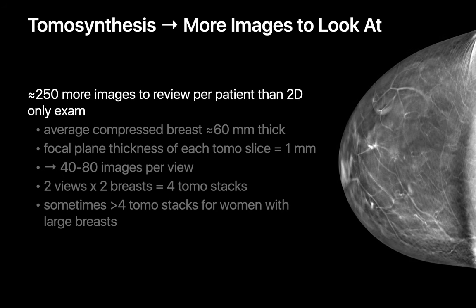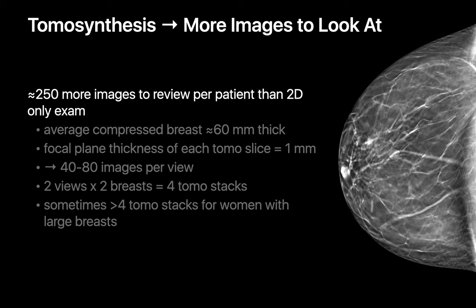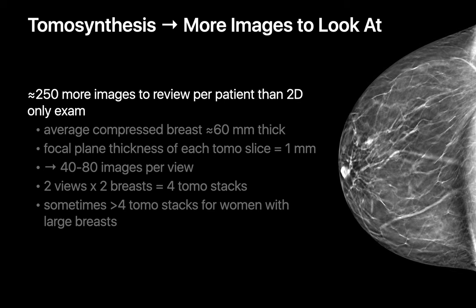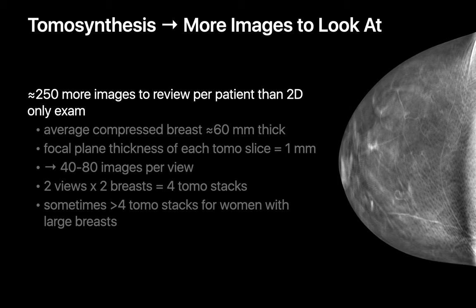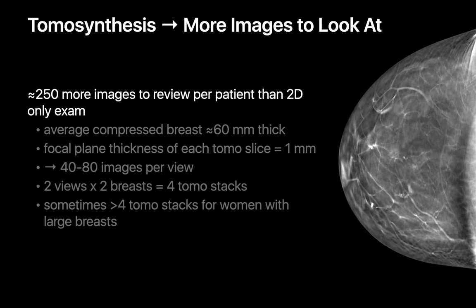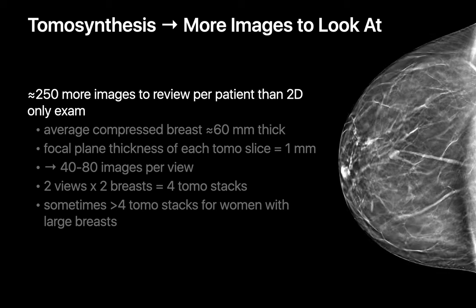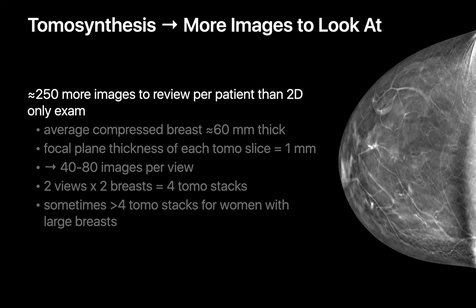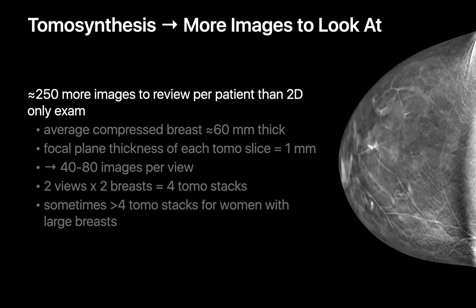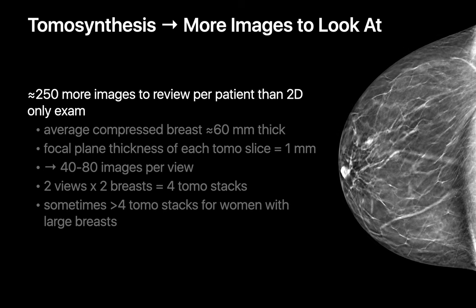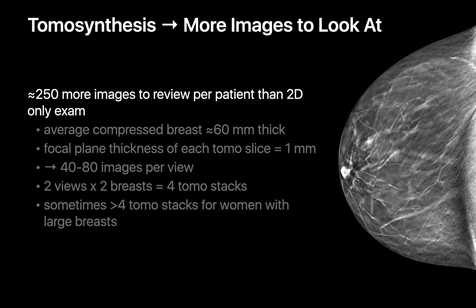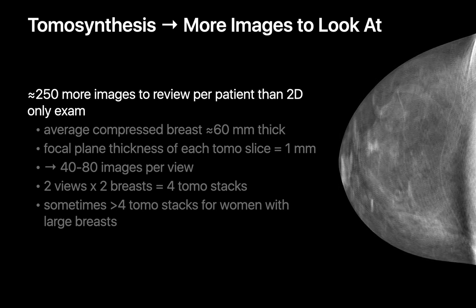While a standard 2D mammogram study usually results in four images — one CC and one MLO view of each breast — tomosynthesis results in many, many more images to look at. Since tomosynthesis images of the breast are generated at focal planes one millimeter apart, and the average breast is around 60 millimeters thick when compressed, you're dealing with around 60 images for one view of one breast. Since we'll do tomosynthesis stacks in the CC and MLO views for both breasts, you're talking about almost 250 images. And in women with large breasts, the images may be much more. You may be interested to learn that there are 86 individual images in the tomosynthesis stack currently running on this slide. Notice how something as subtle as the patient's skin pores come into outstanding focus on some of these images as we move through the stack.